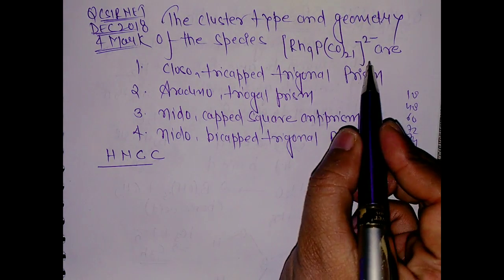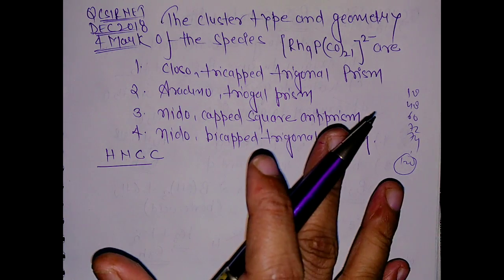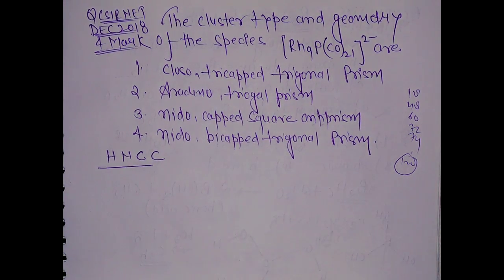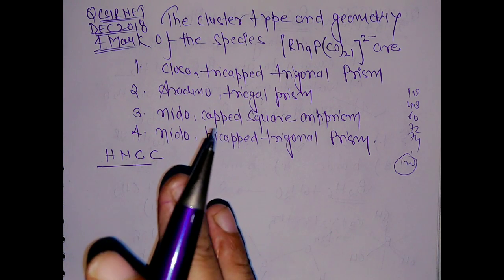When you do the total valence electron count of this, it will exceed 120, so you won't be able to tell from that series what will be the structure of this compound.